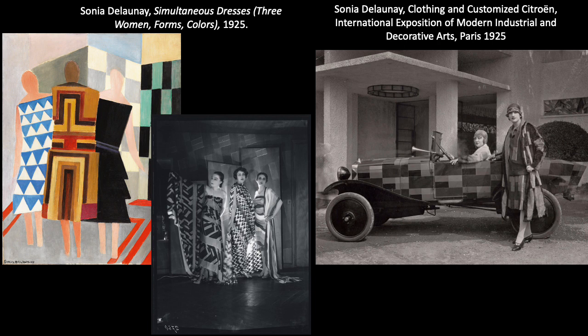Sonia Delaunay also produced Orphist paintings, but she also designed fabric patterns and dress designs quite similar to her paintings. At the 1925 International Expo of Modern Decorative and Industrial Arts, she exhibited a line of inexpensive ready-to-wear clothing she called simultaneous dresses, and she also decorated a Citroën sports car to match one ensemble. She viewed both the car and her clothing designs as symbols of the New Age because they had been designed inexpensively for mass production and with the newly independent modern woman in mind.